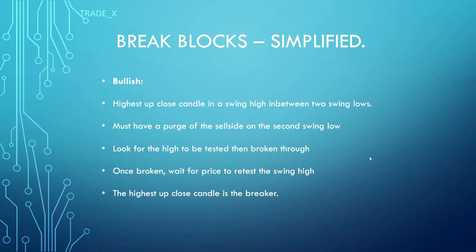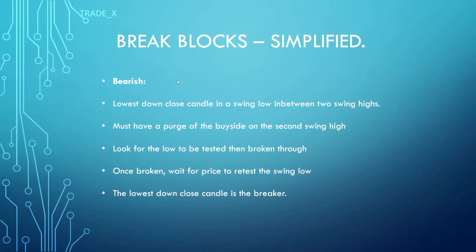Starting with the bullish breaker: we're looking for the highest up-close candle in a swing high, in between two swing lows. We must have a purge of the sell side on the second swing low. We're looking for the high to be tested, then broken through, and once broken, wait for price to retest the swing high. The highest up-close candle is the breaker — that's where we'd be looking to take entries to move higher.